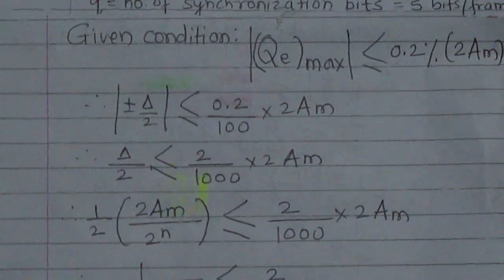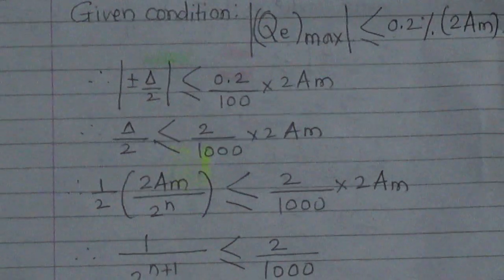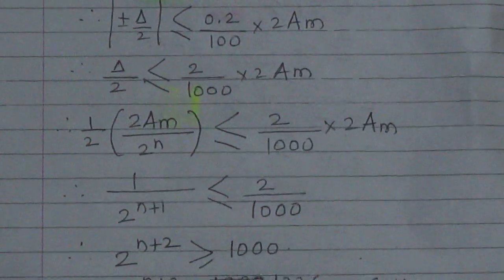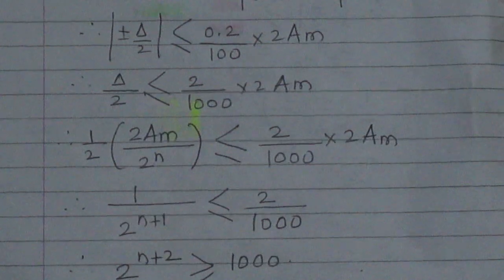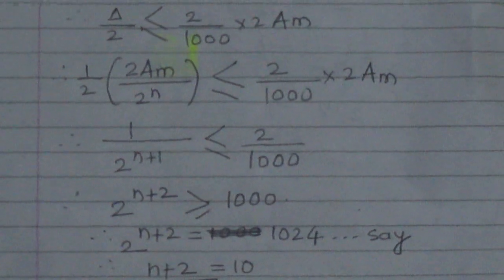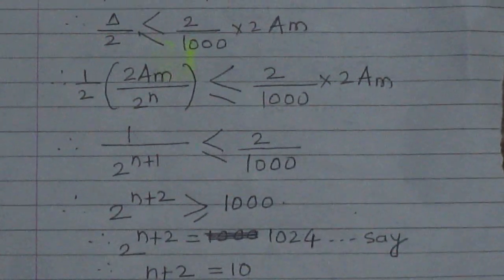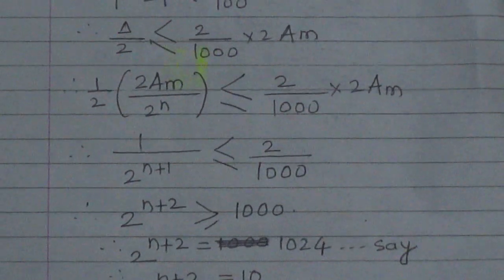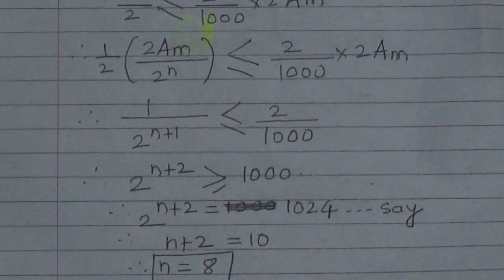We know the step size delta = 2Am / 2^n. Substituting, (1/2) × (2Am / 2^n) ≤ (2/1000) × 2Am. The 2Am terms cancel, giving 1 / 2^(n+1) ≤ 2/1000, which means 2^(n+2) ≥ 1000. Since 2^10 = 1024 satisfies this, n + 2 = 10, so the number of bits per sample n = 8.